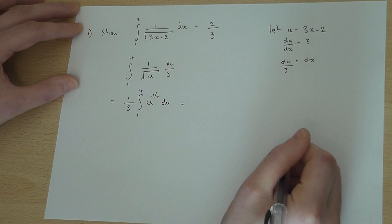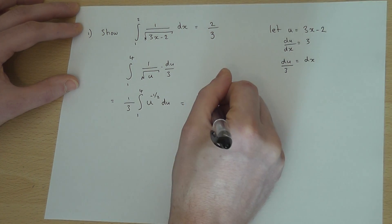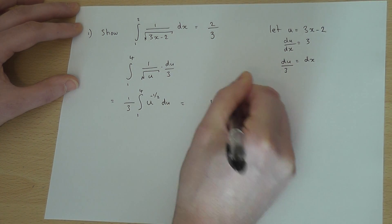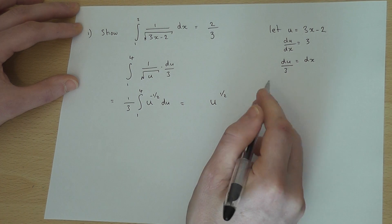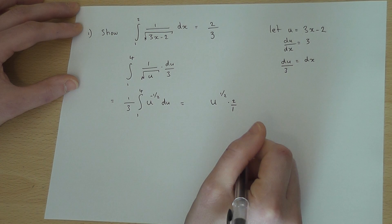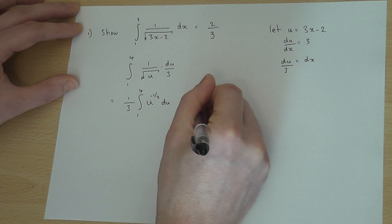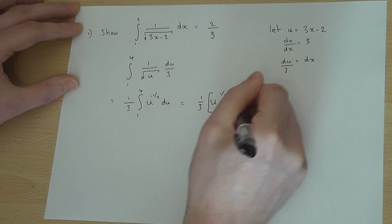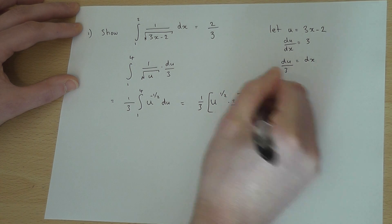So if I now integrate this, I add 1 to the power to get u to the power of 1 half, and then divide by 1 half, which is the same as timesing by 2 over 1. There's a factor of a third here, and the limits are between 1 and 4.